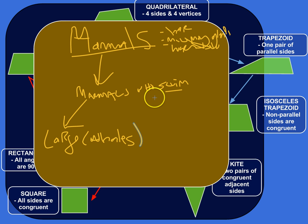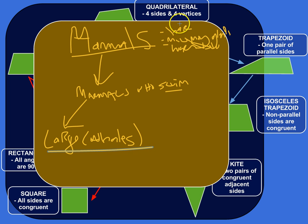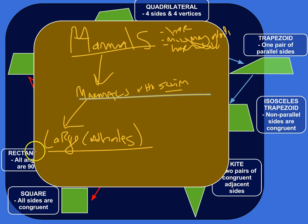Not all mammals who swim are large. Dolphins are not that big, but whales are very big. So whales are a subgroup of mammals who can swim, and mammals who can swim are a subgroup of just mammals. So everything below mammals will have all the characteristics of mammals. Whales have hair and mammary glands and are warm-blooded, but they also swim and have the special characteristic that they're large.